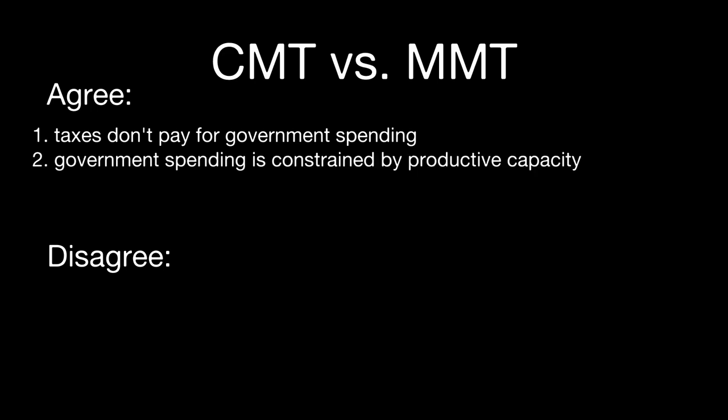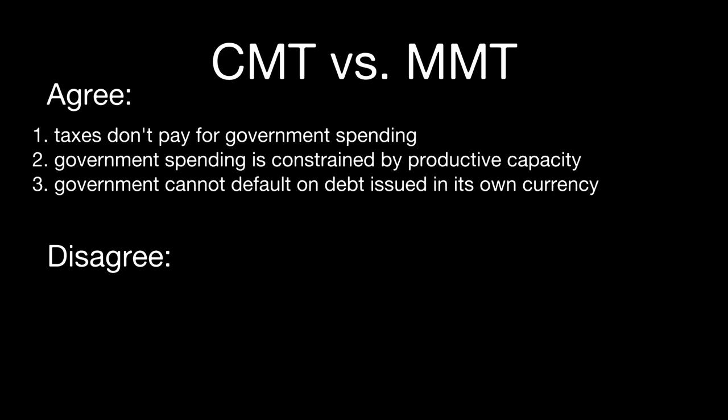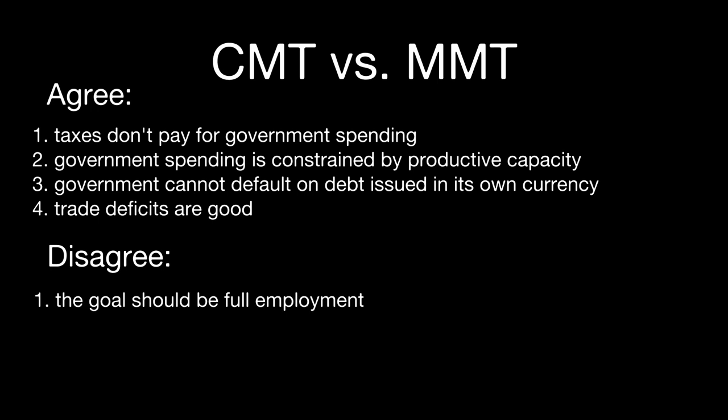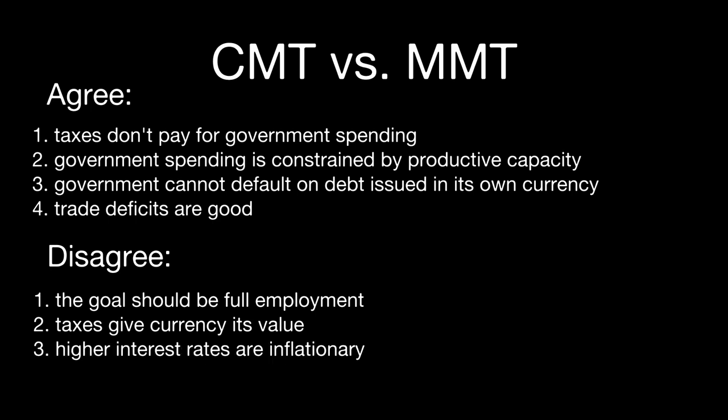What do you basically agree with in MMT, and what do you disagree with? The four most important agreements: taxes don't pay for government spending, government spending is constrained by productive capacity and real resources, the government cannot default on debt issued in its own currency, and trade deficits are generally good. But you disagree that the goal should be full employment, that taxes give the currency its value, that higher interest rates are inflationary, and that taxation curbs inflation.